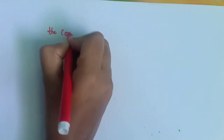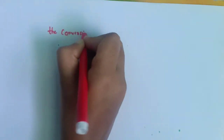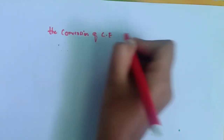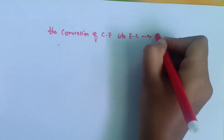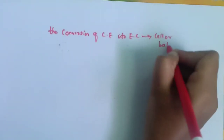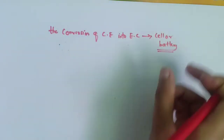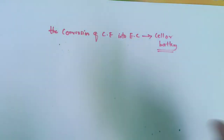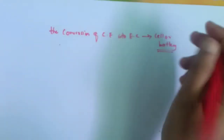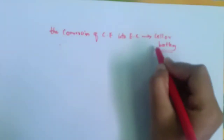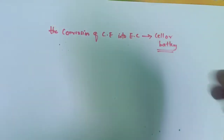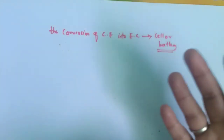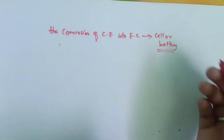A cell is designated as a single unit, whereas a battery is an arrangement of two or more cells. Usually these cells are connected in series or parallel to supply the necessary current or voltage in batteries.